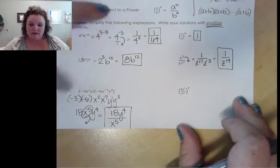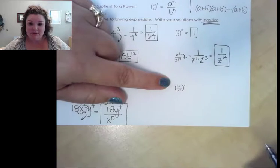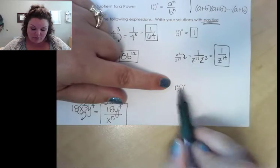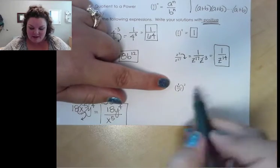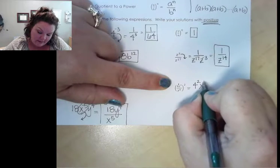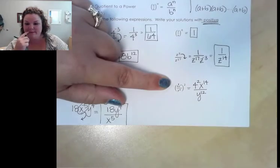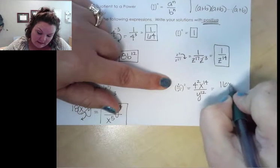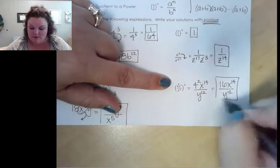This one: we are squaring this entire rational expression, so we distribute that 2 to everything's exponent. The 4 right now doesn't have a written exponent, so I put a 1 there. When I distribute, this gives me 4 squared x to the 14th on top, and y to the 12th on the bottom. The only thing left to do is simplify 4 squared. So this gives me 16x to the 14th all over y to the 12th.